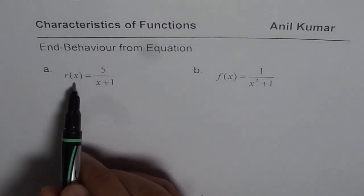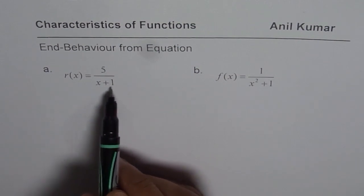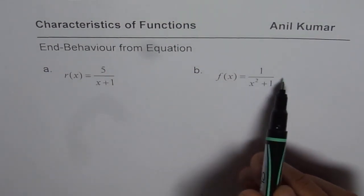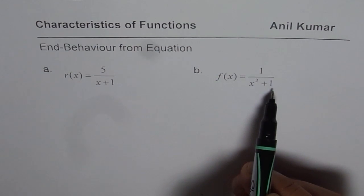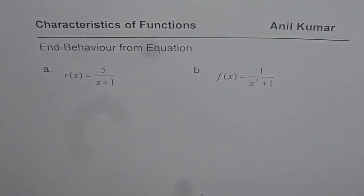The first one is a rational function 5 over x plus 1. The other one is a function 1 over x squared plus 1. You need to write down the end behavior of these functions from the given equation.